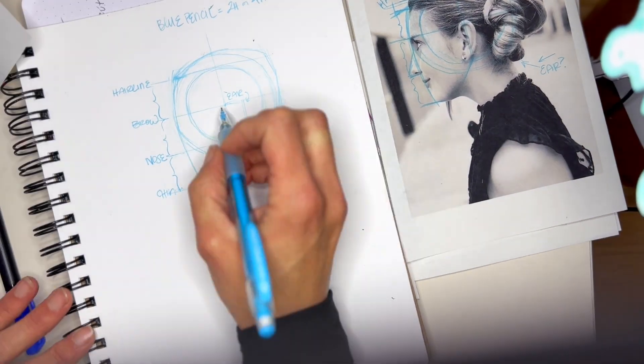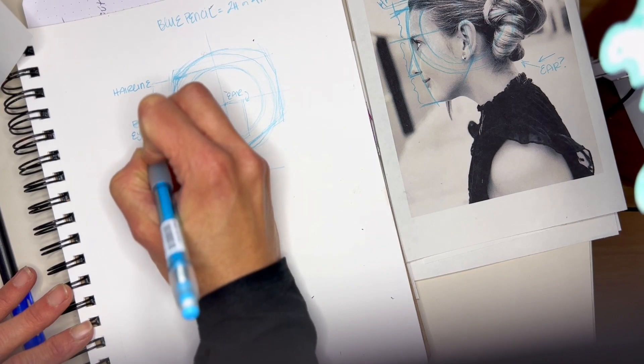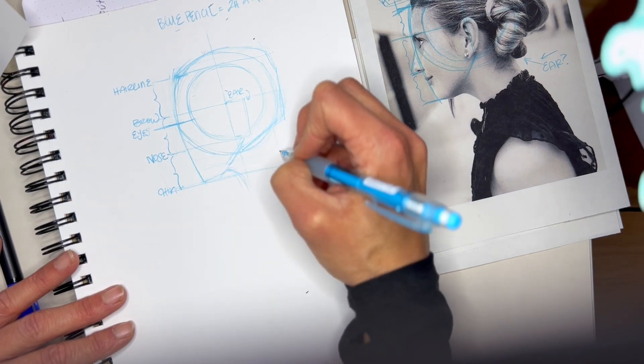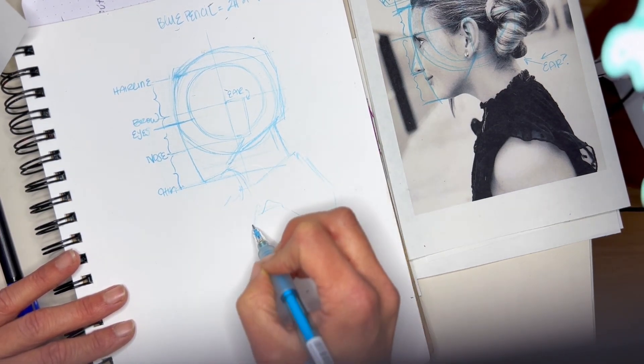Now it's time to put in more of the features. The eyes are going to live inside about the upper half between the brow and the nose. Where I drew this line for the eyes is about the center line of the eyes.